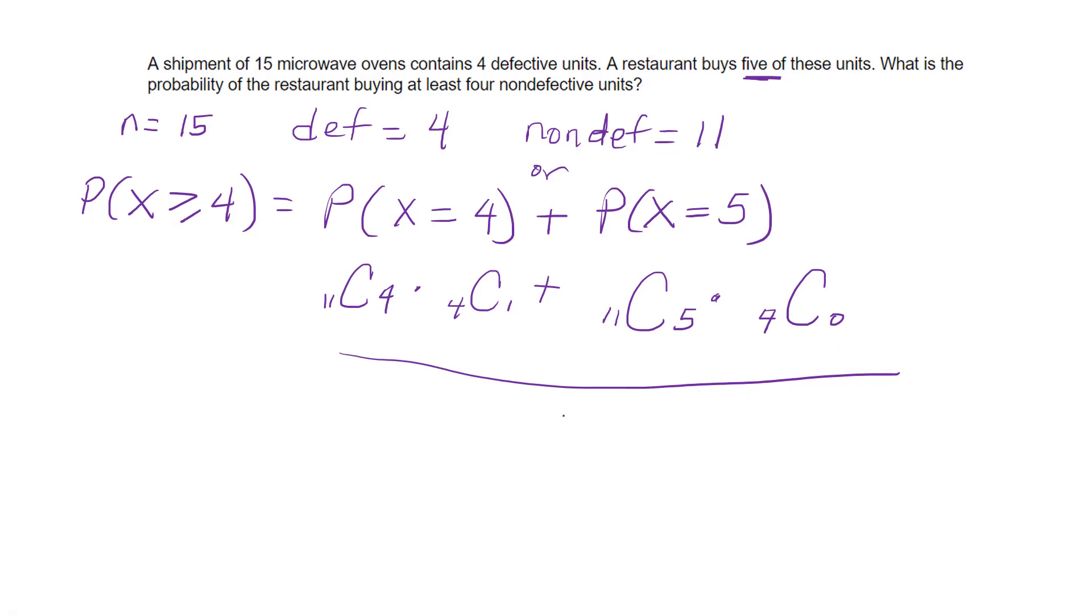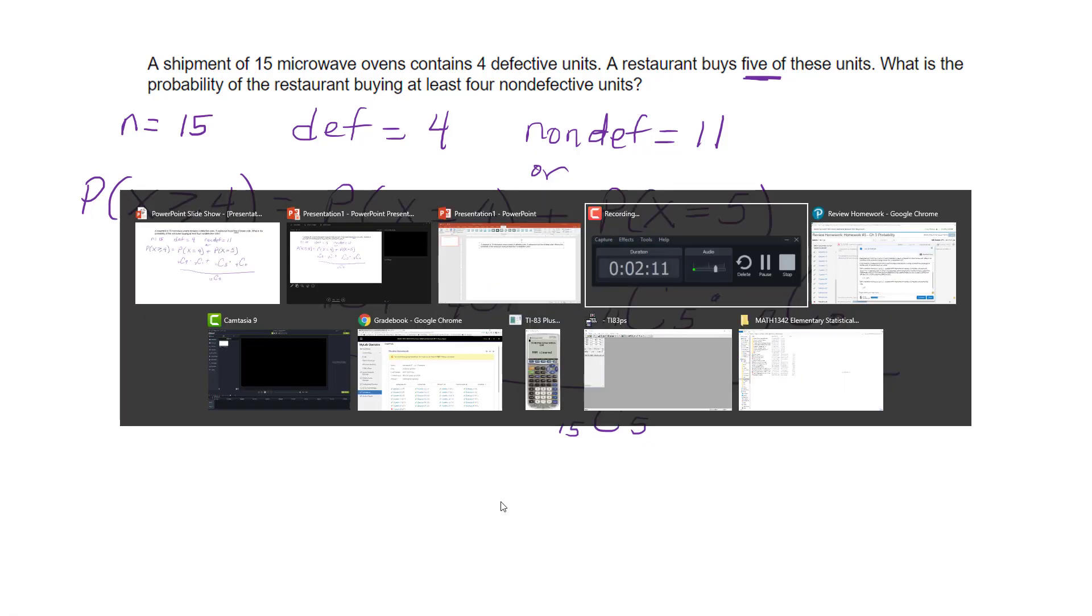Well, my total sample size here, my space, what I'm going to divide by is going to be 15 out of, they're getting five. All right, so I have everything that I need here. Now all I have to do is figure out how to put this in my calculator.